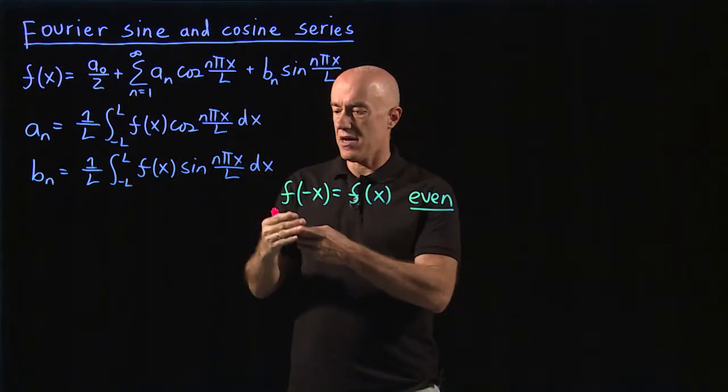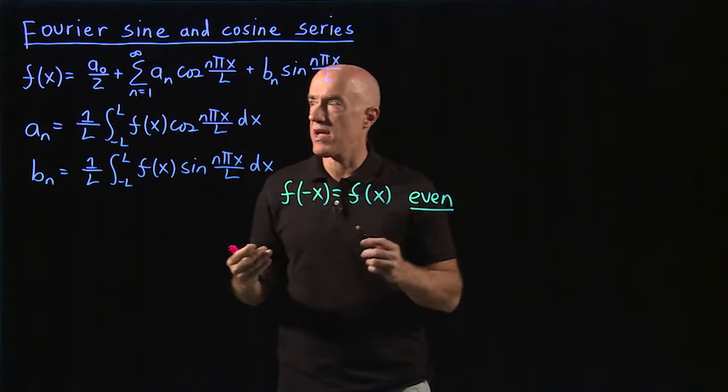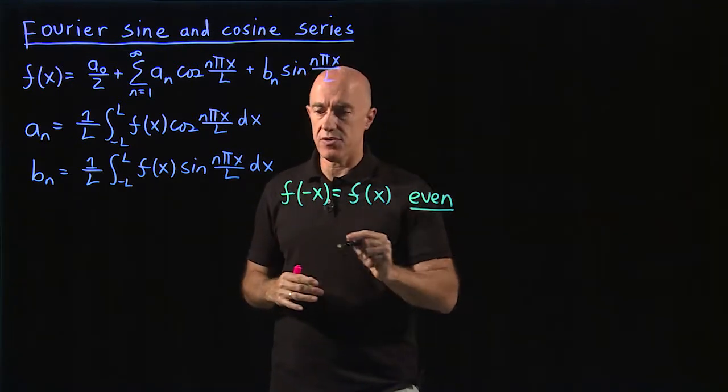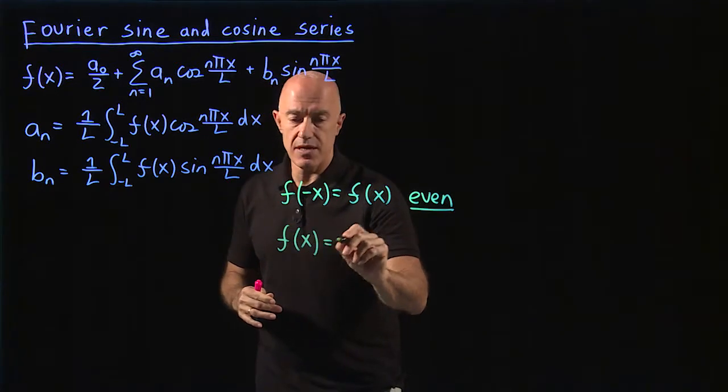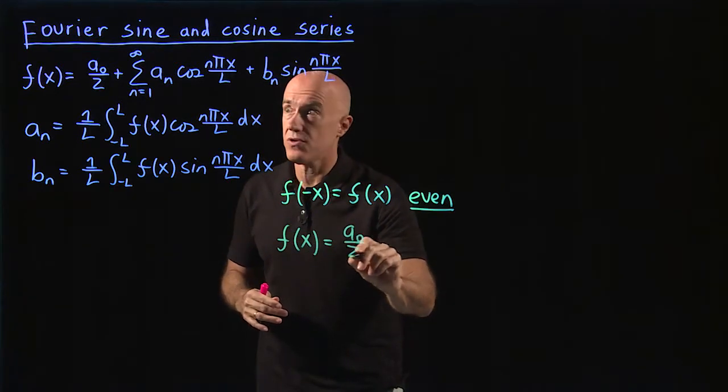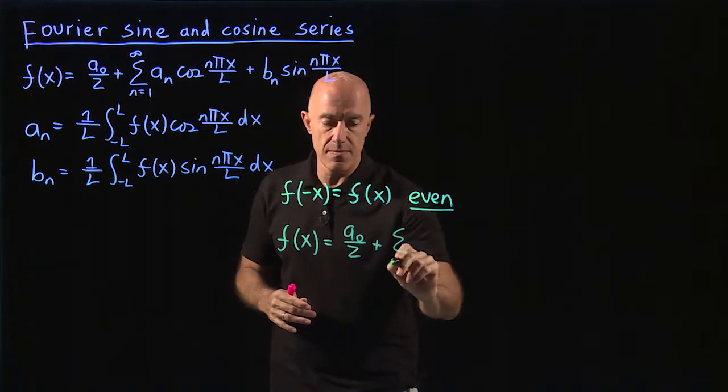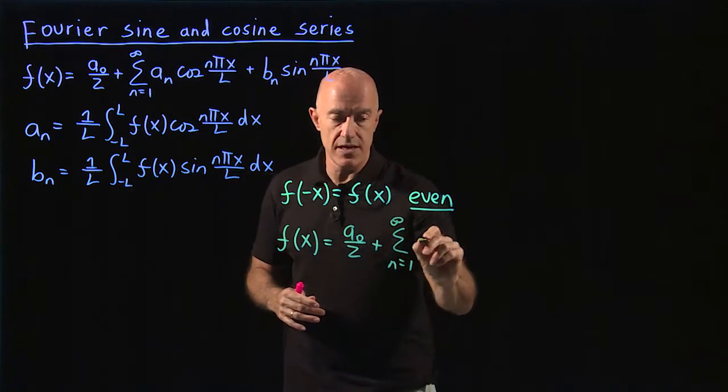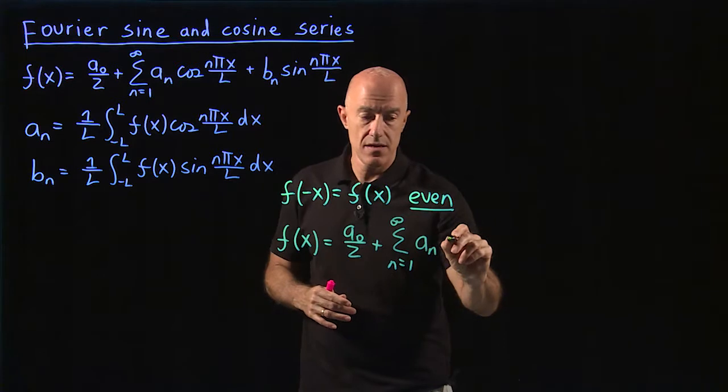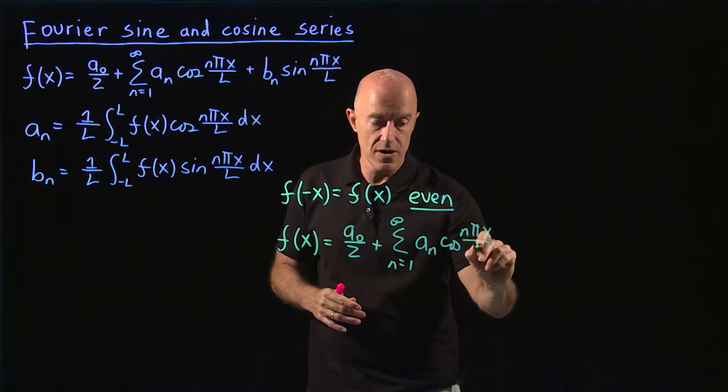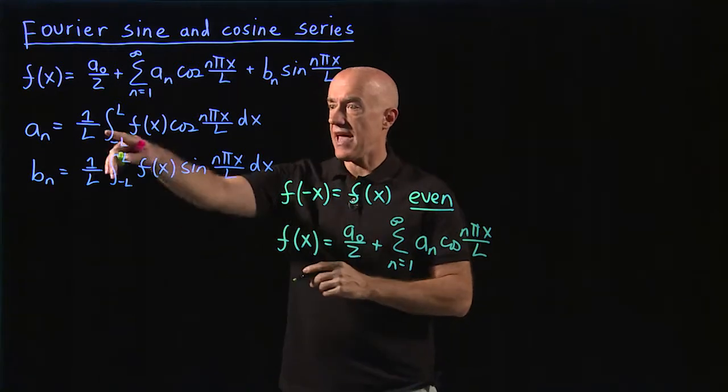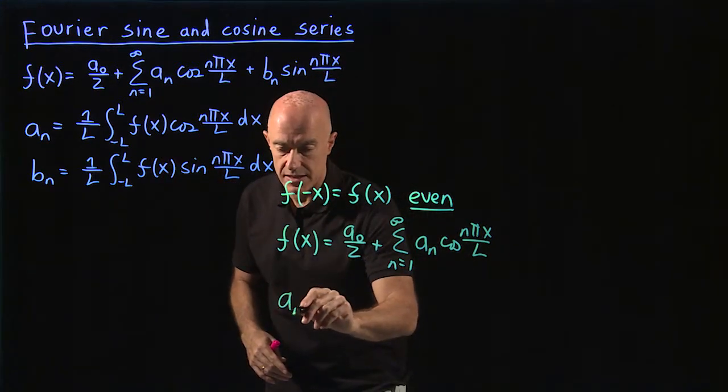And then we end up with the Fourier cosine series. So we'll get f of x is simply a naught over 2 plus the sum from n equals 1 to infinity of a sub n cosine n pi x over L.